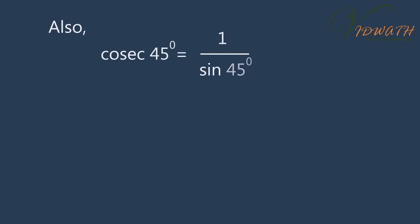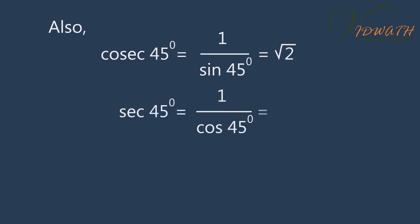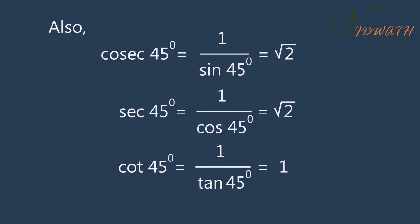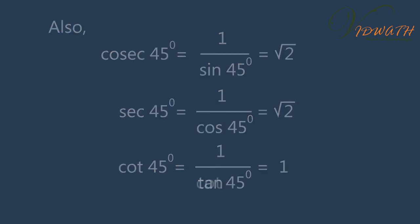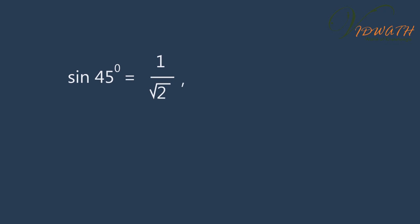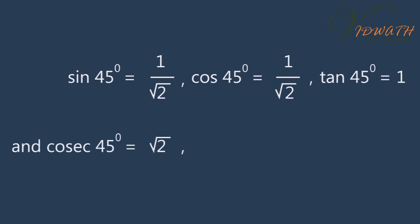Also, cosec 45 degree is equal to 1 by sin 45 degree, which is equal to root 2. Sec 45 degree is equal to 1 by cos 45 degree, which is equal to root 2. Cot 45 degree is equal to 1 by tan 45 degree, which is equal to 1. This is because sin theta, cos theta, and tan theta are the reciprocals of cosec theta, secant theta, and cot theta respectively. Therefore, sin 45° = 1/√2, cos 45° = 1/√2, tan 45° = 1, cosec 45° = √2, sec 45° = √2, cot 45° = 1.